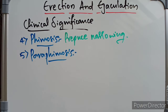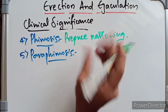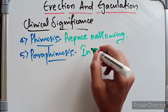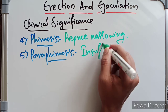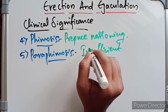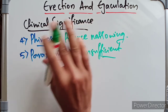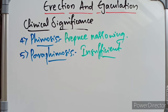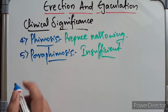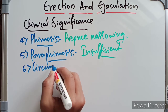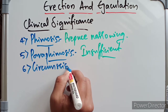Paraphimosis is an uncommon condition in which narrowing of the prepuce is insufficient — not a complete narrowing, but a partial one. The prepuce is just sufficiently tight to get stuck on the glans and interferes with copulation.